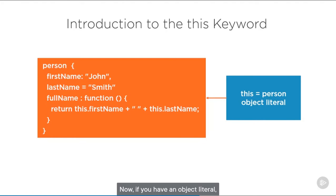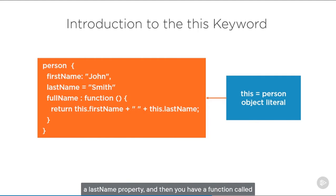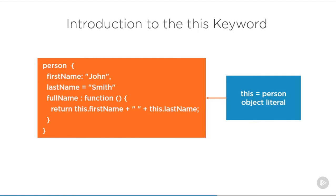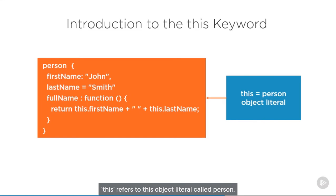If you have an object literal such as 'person', and you have a first name property, a last name property, and a function called fullName — when you use 'this' inside that function, 'this' refers to the object literal called 'person'.